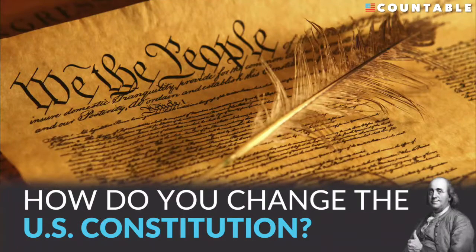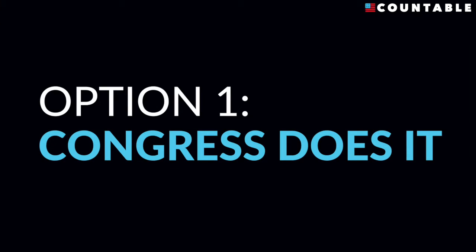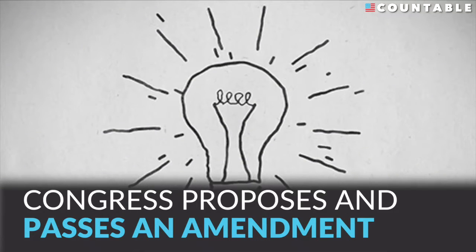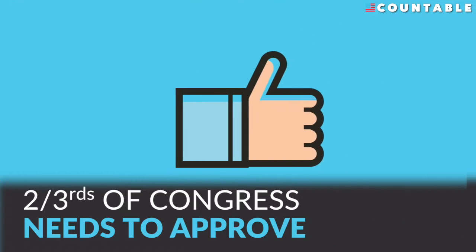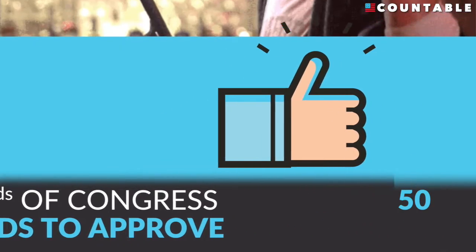How do you change the U.S. Constitution? Well, there are two ways. The first way is through Congress. In this case, Congress proposes and passes an amendment. There needs to be a two-thirds majority vote for approval.